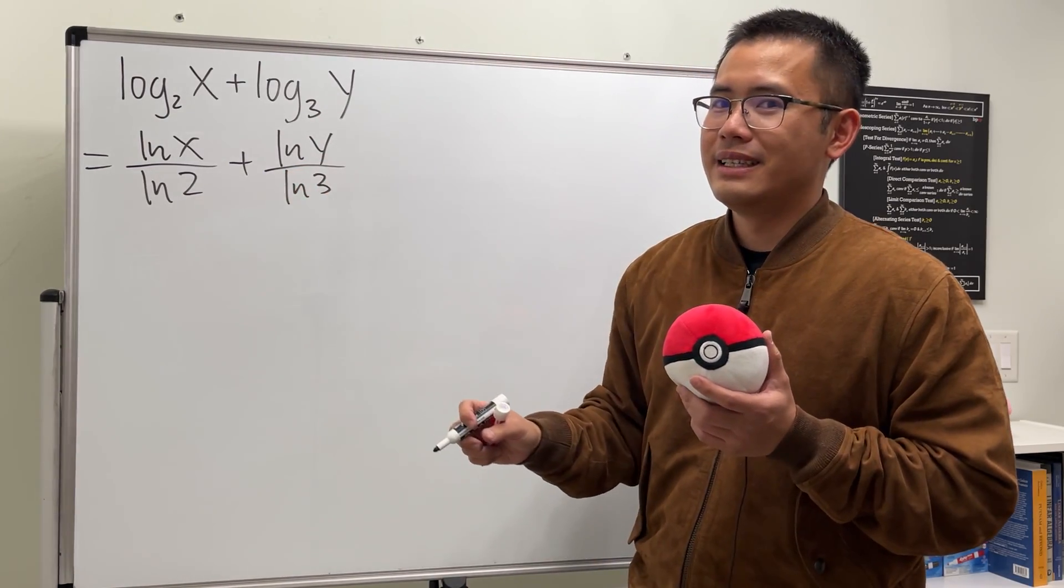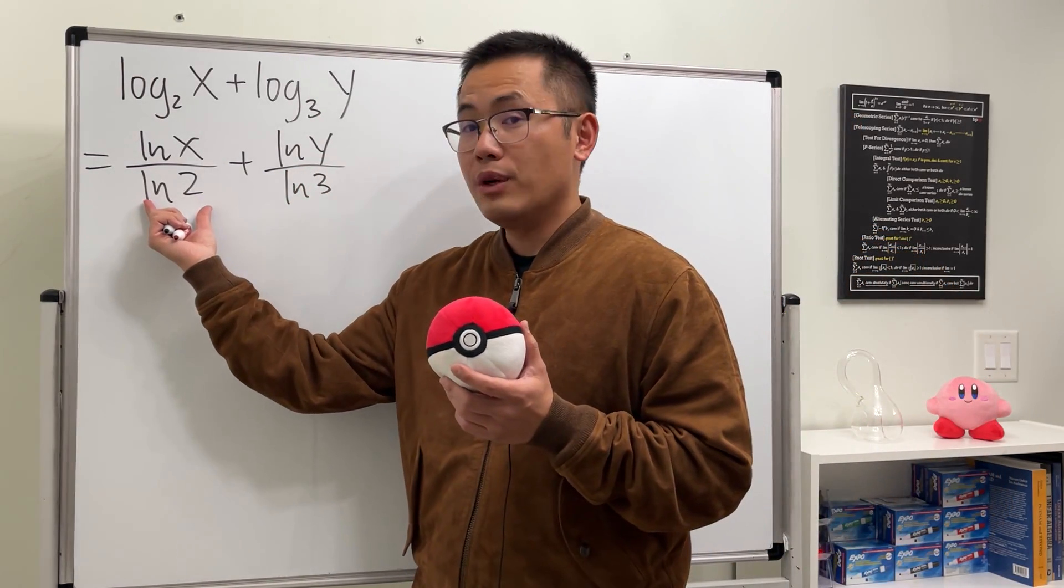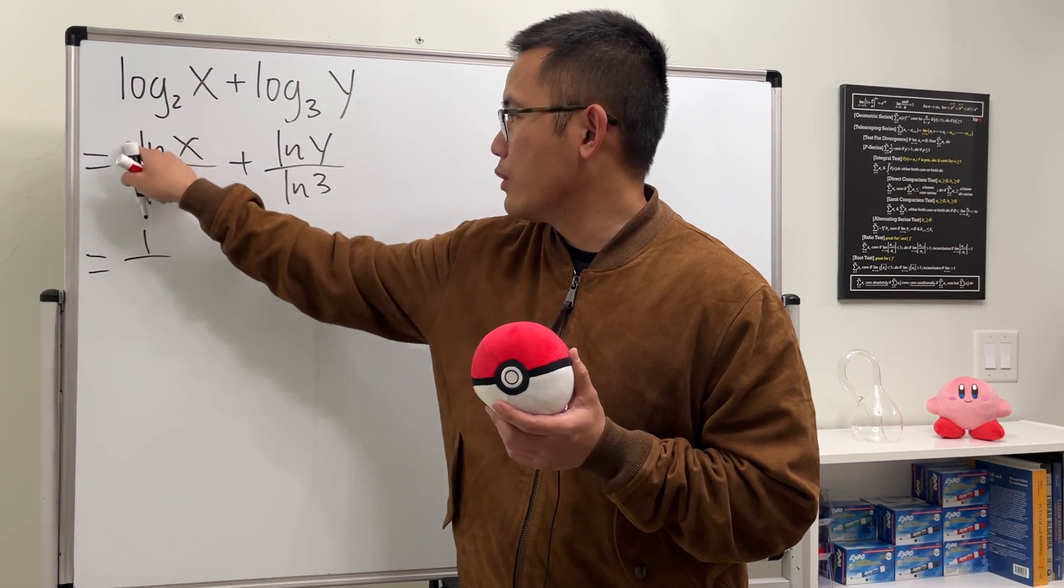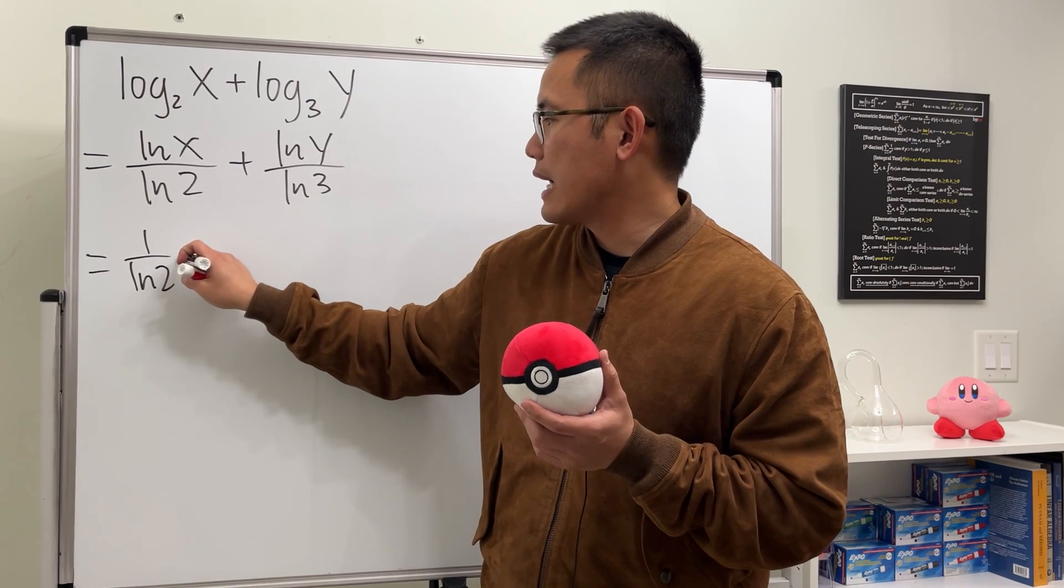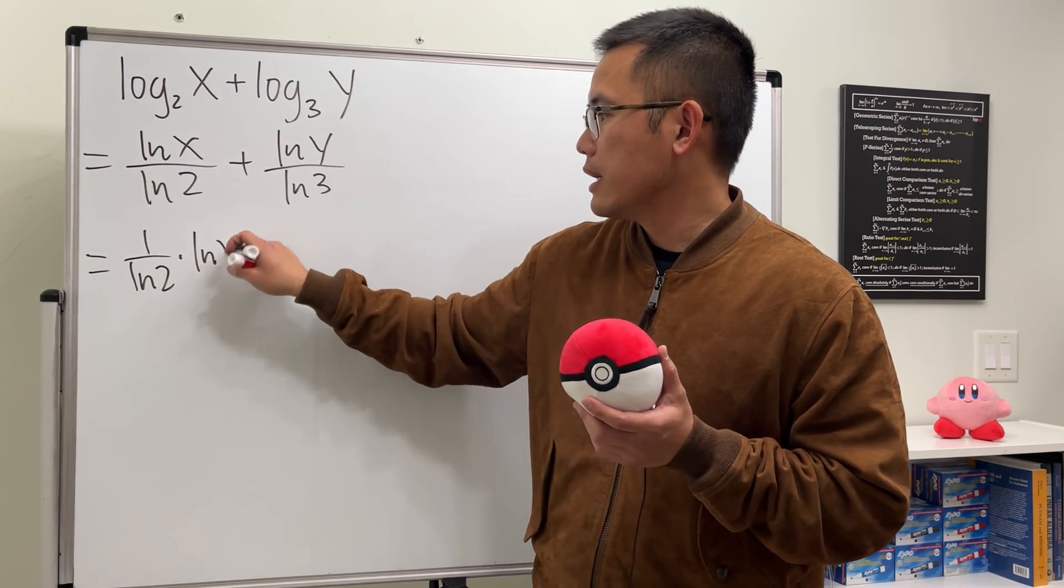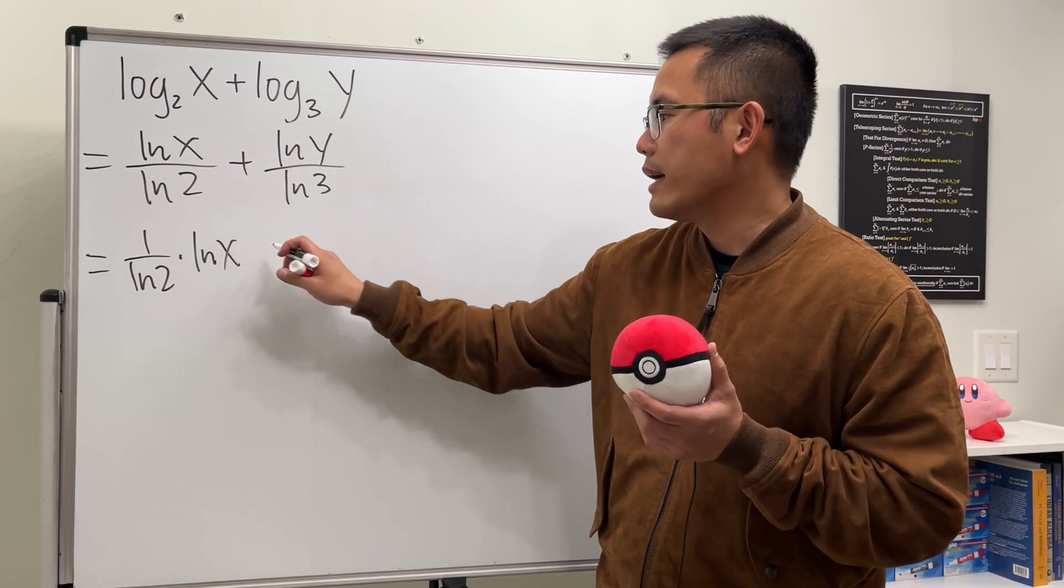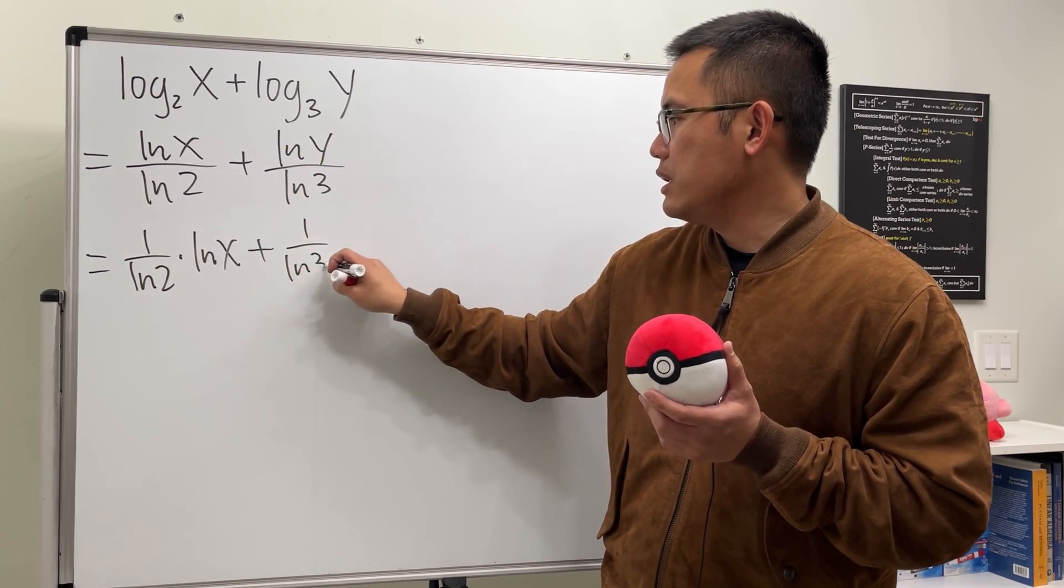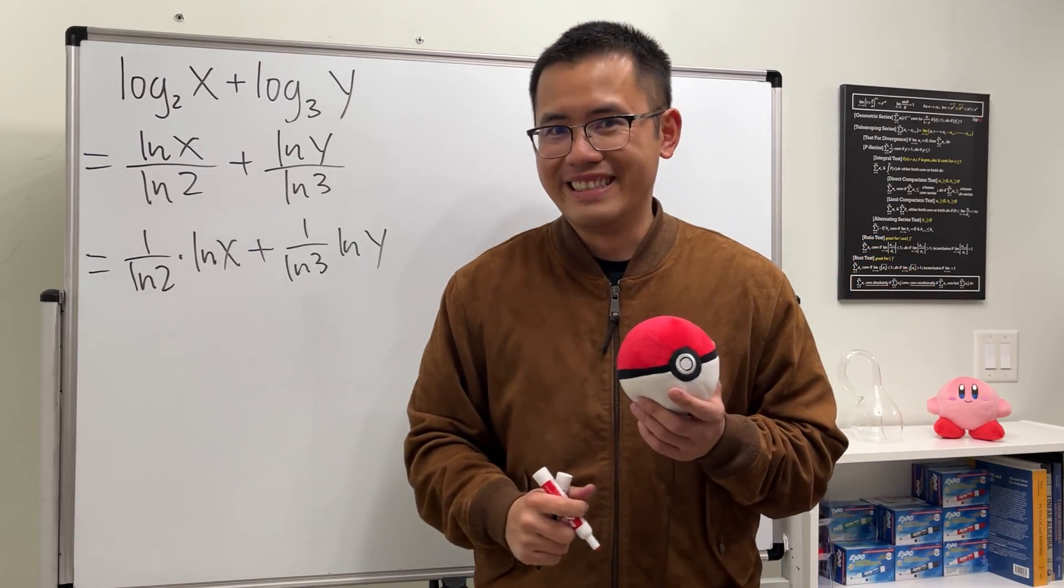And now let's see, we have ln 2 on the bottom, but that's really the same as saying 1 over ln 2 times ln x, right? And then let's do the same thing for the second one. We are going to add 1 over ln 3 times ln y. And now do we see it?